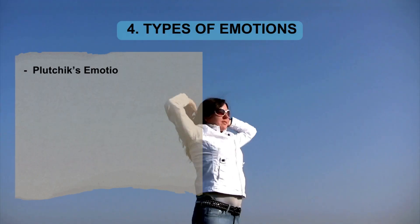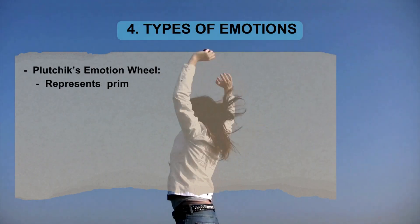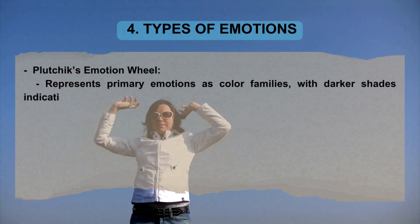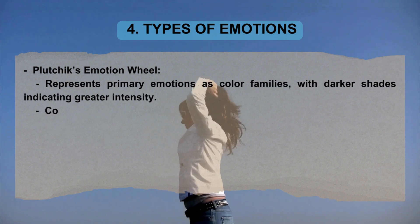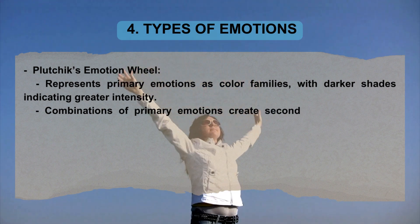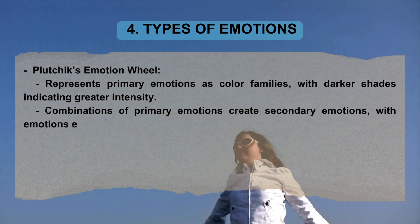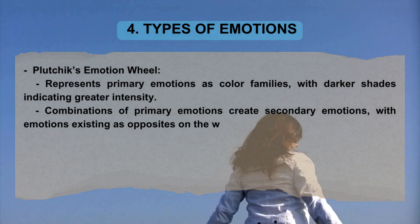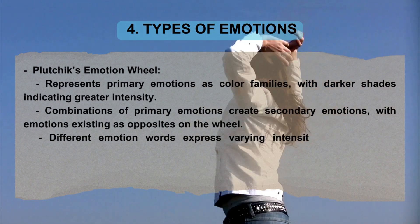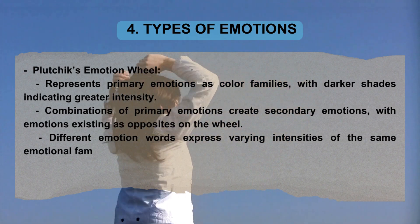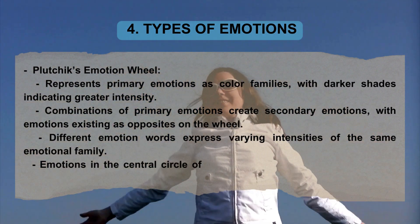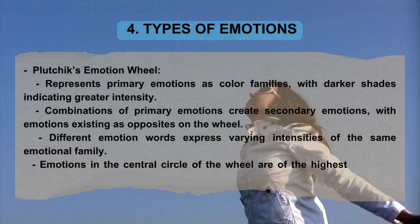Plutchik's emotion wheel represents primary emotions as color families, with darker shades indicating greater intensity. Combinations of primary emotions create secondary emotions, with emotions existing as opposites on the wheel. Different emotion words express varying intensities of the same emotional family. Emotions in the central circle of the wheel are of the highest intensity.